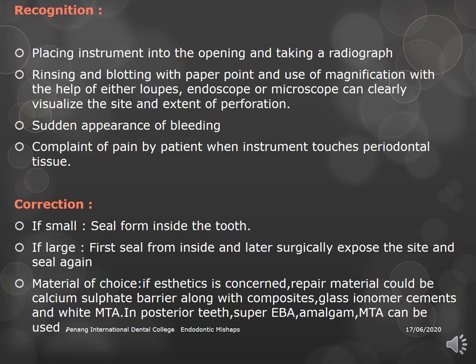Treatment of perforations: small perforations can be sealed from inside. Large perforations require internal sealing followed by surgical exposure and resealing, with a poorer prognosis. The material of choice for sealing is MTA (Mineral Trioxide Aggregate) — studies show it provides superior repair compared to other materials. For aesthetic cases, calcium sulfate barrier with composite, glass ionomer, or white MTA can be used; for posterior teeth, MTA or Biodentine, which shows similar results to MTA.